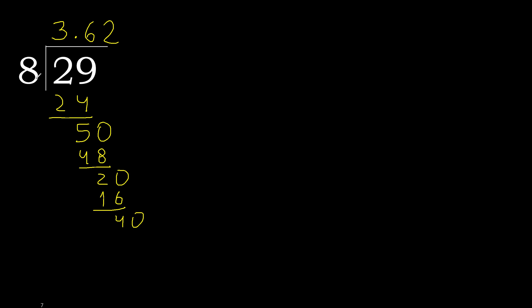0 point. 40. 8 multiplied by 5: 40 is not greater. Subtract: 0. 0, therefore finished.